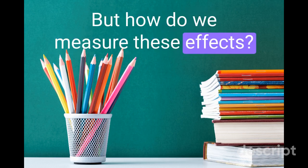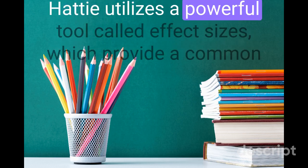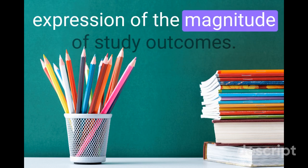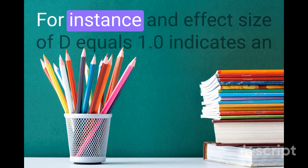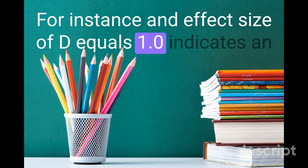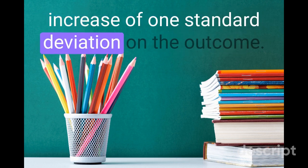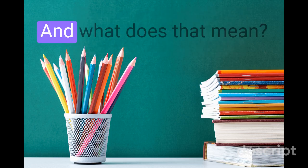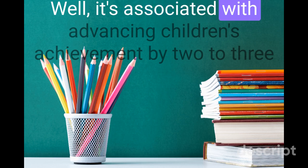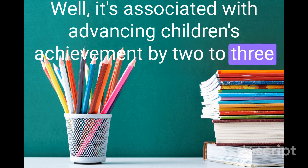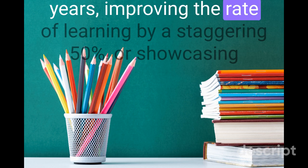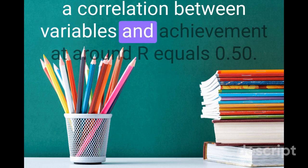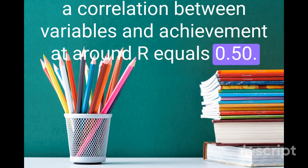But how do we measure these effects? Hattie utilizes a powerful tool called effect sizes, which provide a common expression of the magnitude of study outcomes. For instance, an effect size of D equals 1.0 indicates an increase of one standard deviation on the outcome, specifically improving school achievement. It's associated with advancing children's achievement by two to three years, improving the rate of learning by a staggering 50%, or showcasing a correlation between variables and achievement at around R equals 0.50.